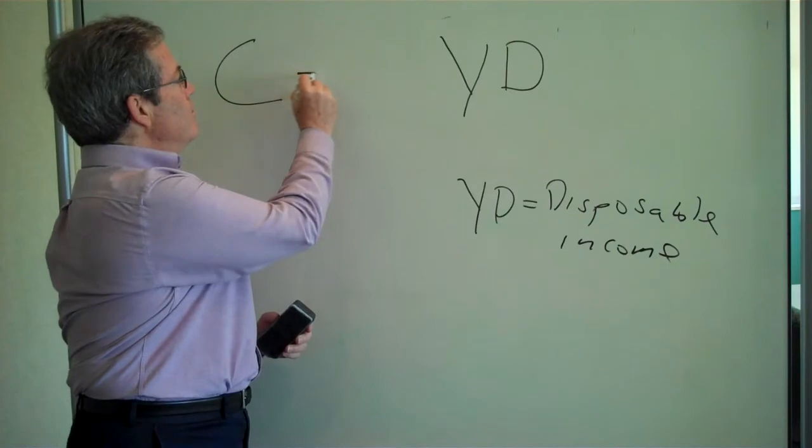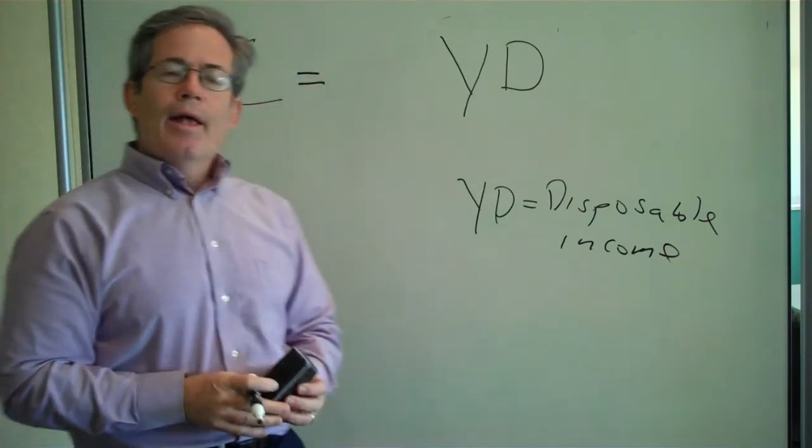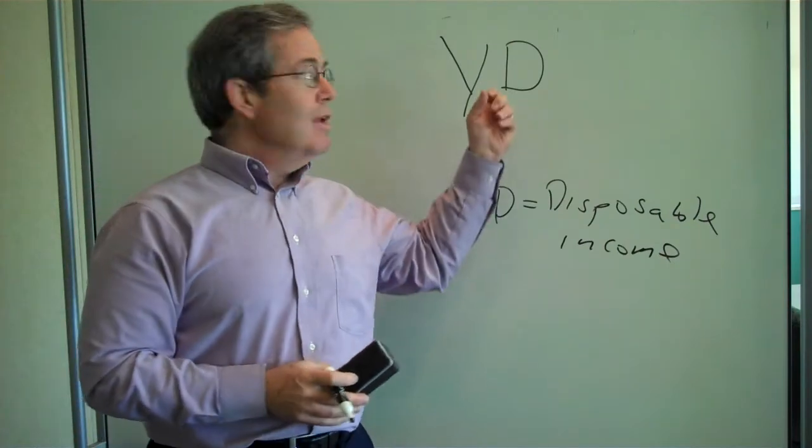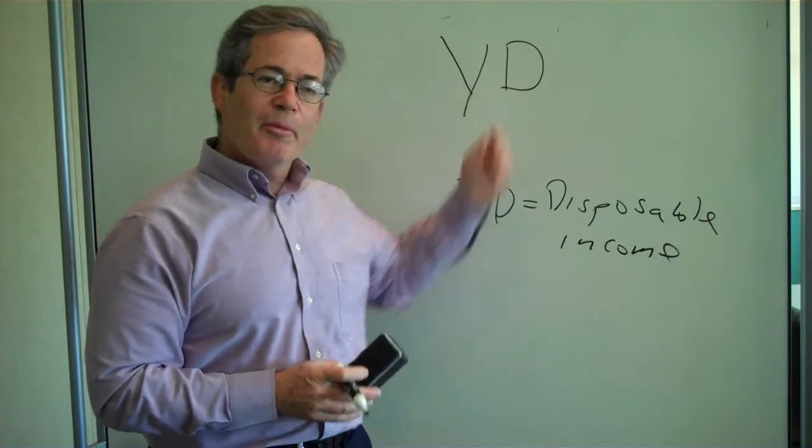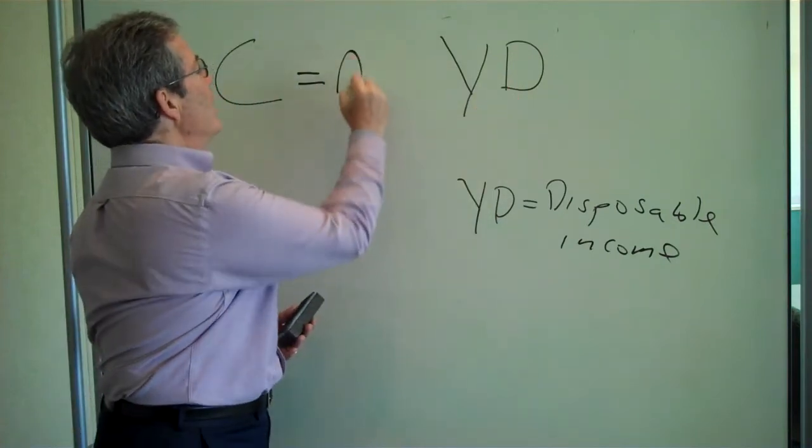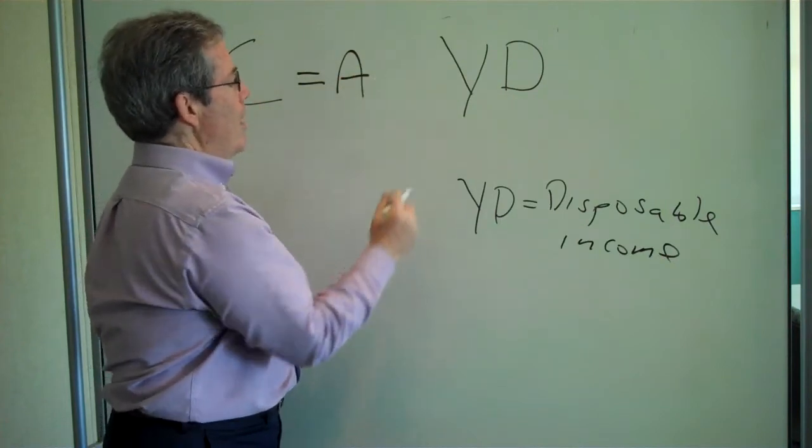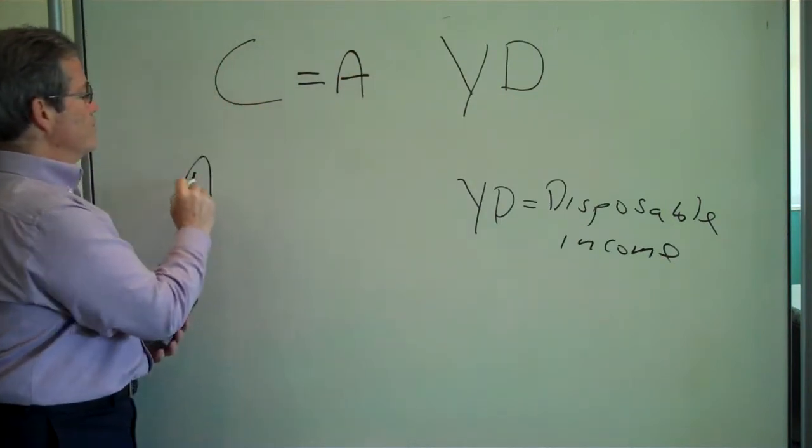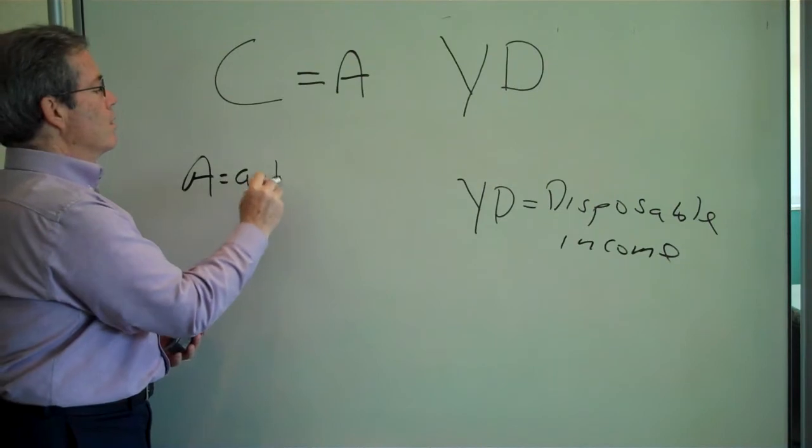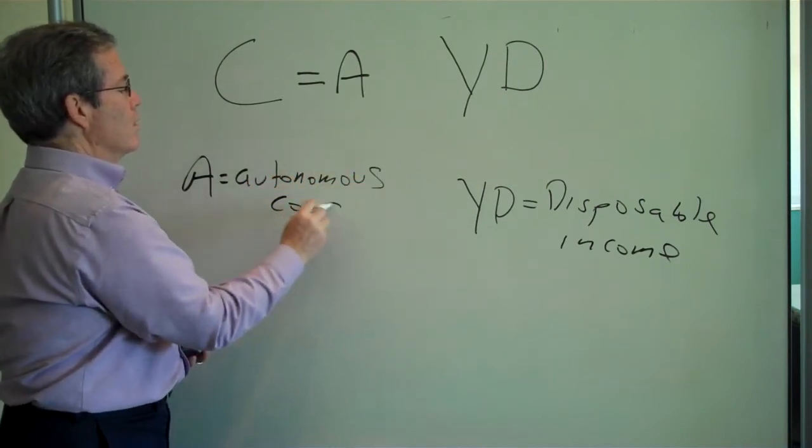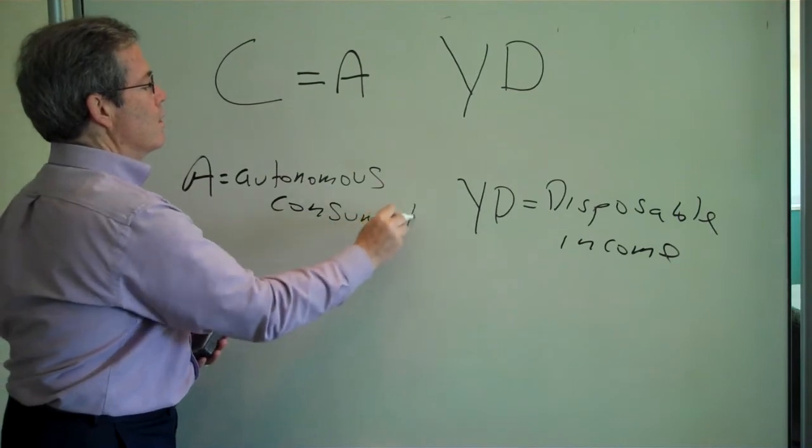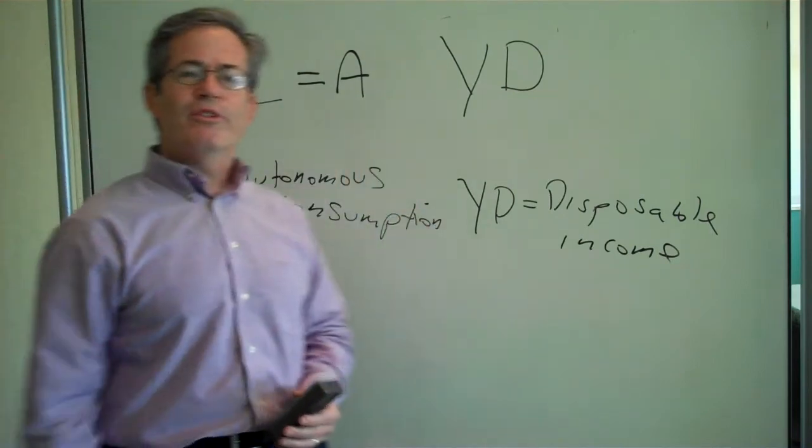But remember what I said: even if you don't have any income, even if this is zero, you're still going to consume something. So we're going to call that A, where A is autonomous consumption.